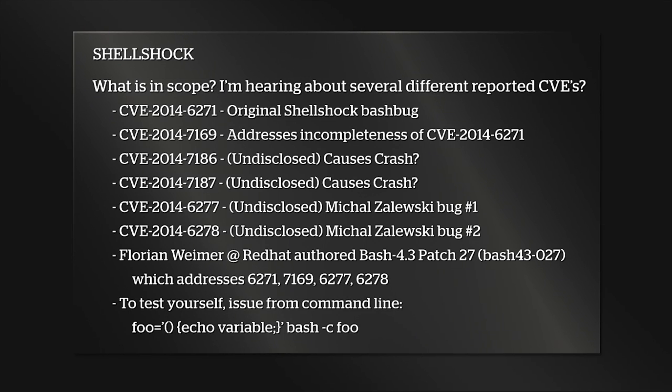Florian Weimer at Red Hat looked at this and said we need a good fix. He released Bash 4.3-patch 27, which addresses the original CVE, the 7169 follow-up, and the two Michael Zalewski bugs from Google. It doesn't address the two undisclosed ones. The patch has gone into the GNU source code branch — you can grab it and apply it. Other vendors like Red Hat and SUSE are rebuilding RPMs or Debian packages. Back patches for older versions like 3.4 have also been released.